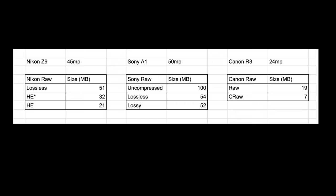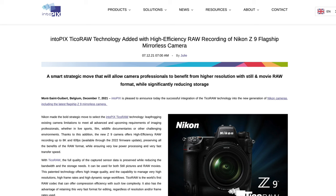Today we're talking about the Z9, which is very interesting because it has lossless compressed, it also has an uncompressed edition, and then what I call HE Star (High Efficiency Star) and High Efficiency. What makes it unique is that these two compression formats are developed in collaboration with a company called IntuPix, and I believe the technology is called Tico RAW.